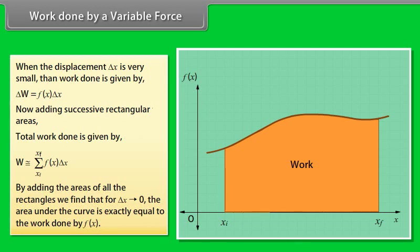By adding the areas of all the rectangles, we find that for delta x tends to 0, the area under the curve is exactly equal to the work done by fx.